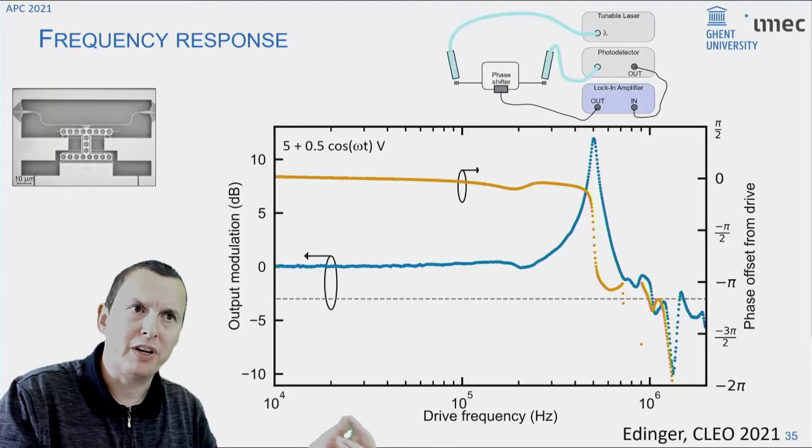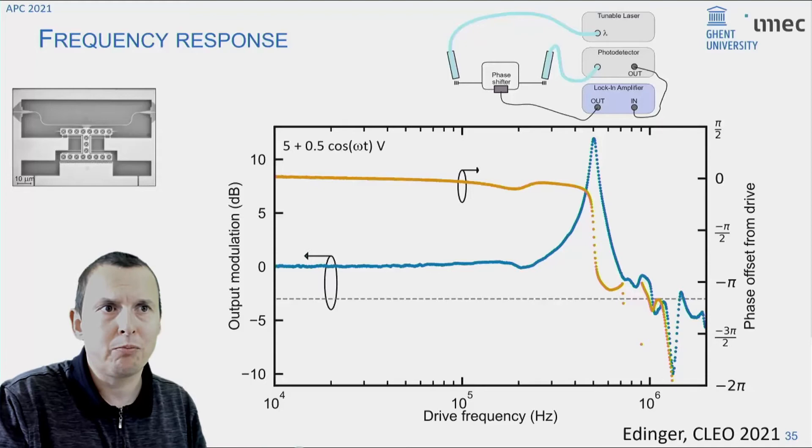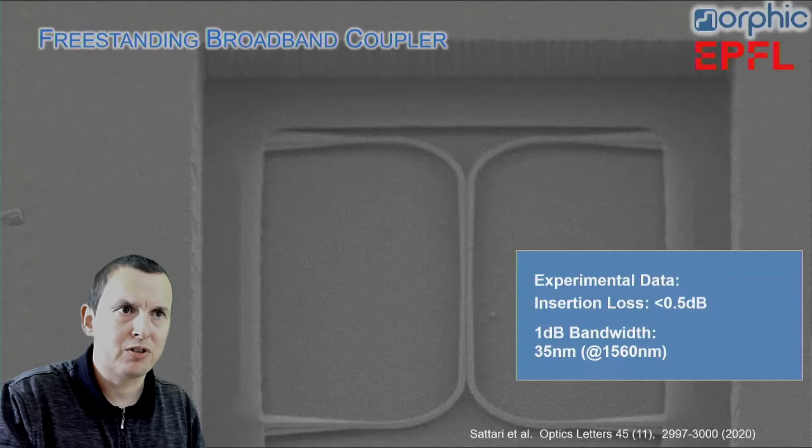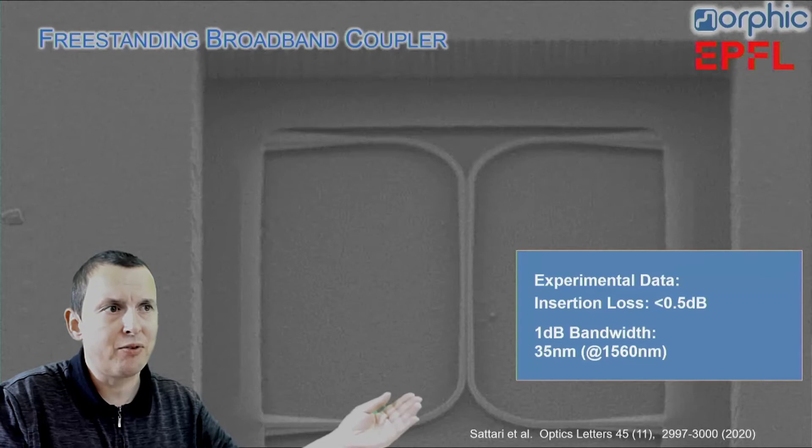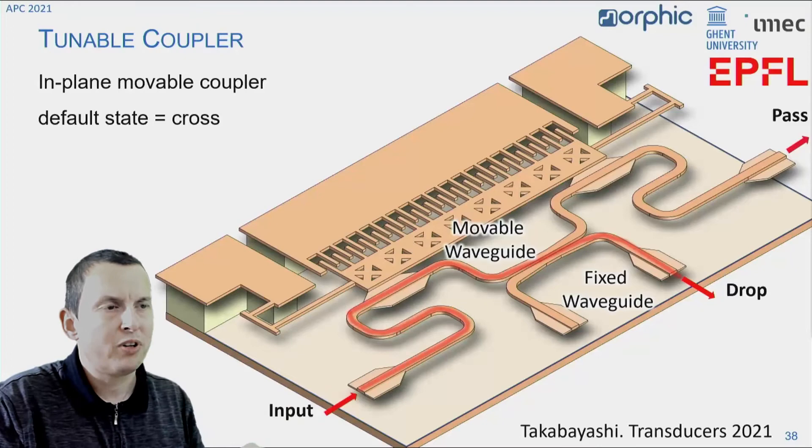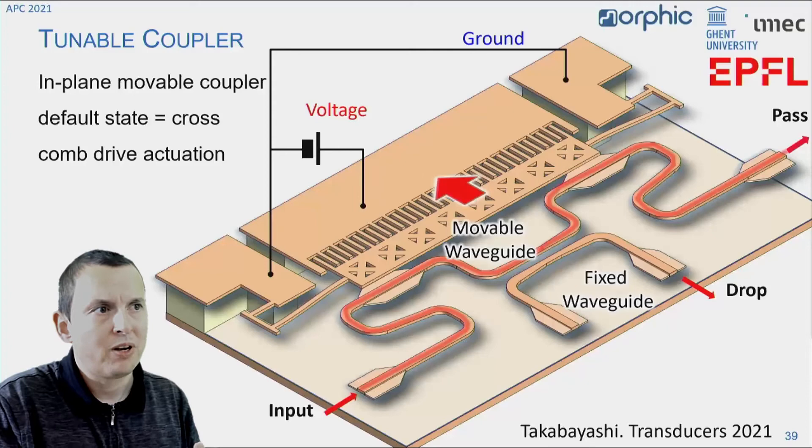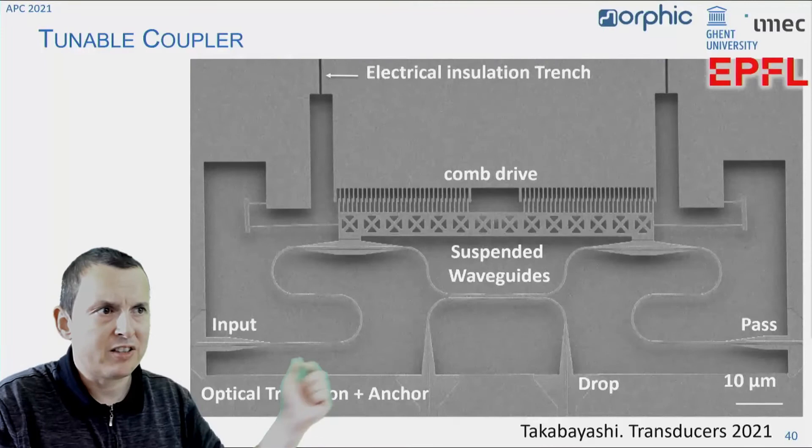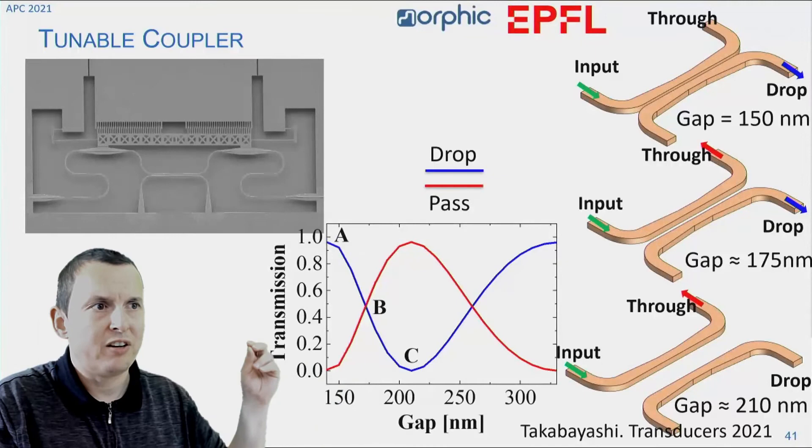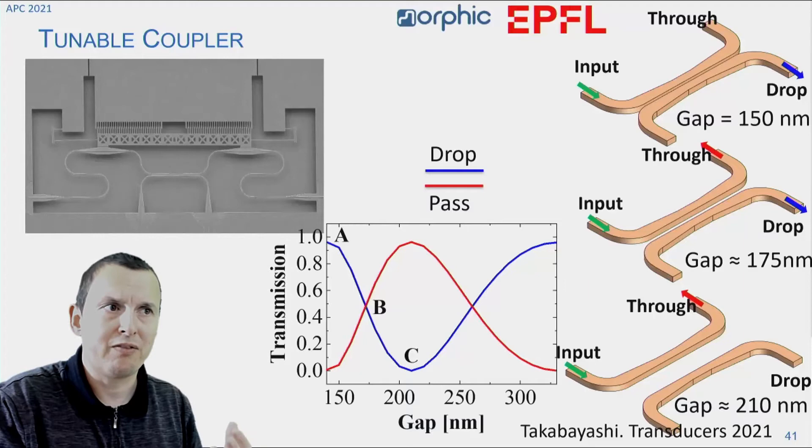So you have an input fiber coupler, you have the splitter, you have the delay line, etc. Now, if we model this phase shifter and its response, we get an estimate that it will take about 30 volts of actuation voltage to induce a pi phase shift. In reality, we find that because of small variations during the fabrication compared to the design, we already get a pi phase shift for a 20 volt actuation. And this with an insertion loss of only 0.2 dB. Now, this is a mechanical device. So that means that it will respond to vibrations as well. And indeed, if we do a frequency analysis, we find that this has a mechanical resonance around 500 kilohertz.